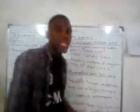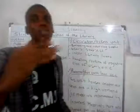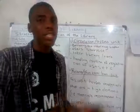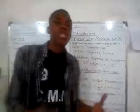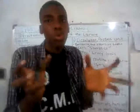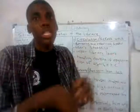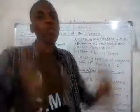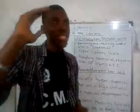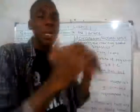Another function of the Circulation or Access Unit is that they check user statistics — they track the number of people who visit the library on a daily basis. For example, in most libraries in Nigeria, when exams are approaching, the library becomes very full, and the user statistics at that time are very high.